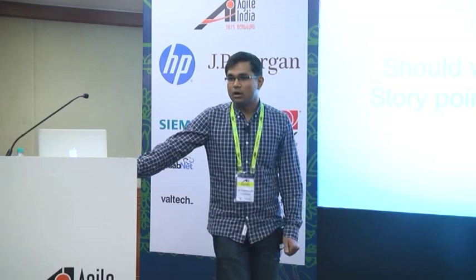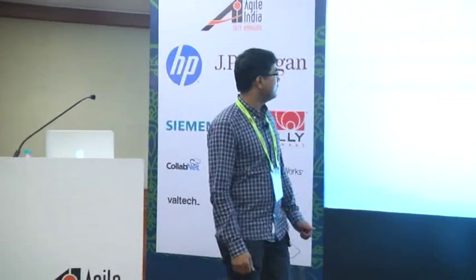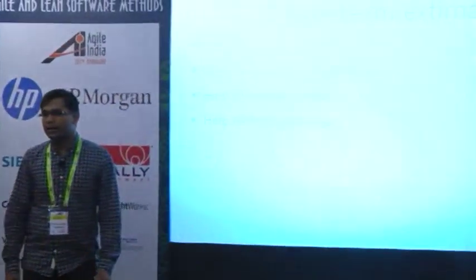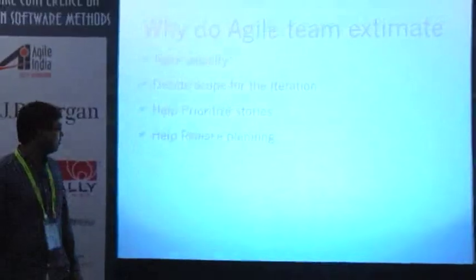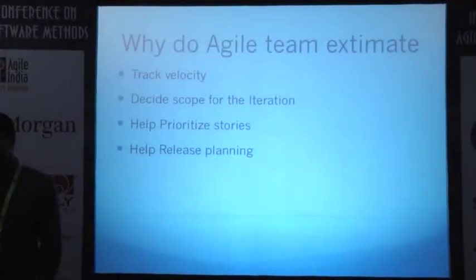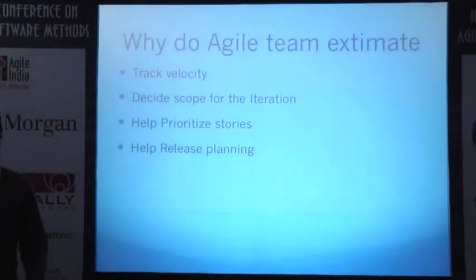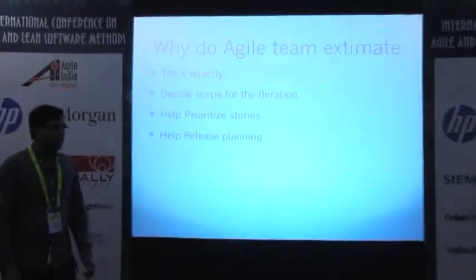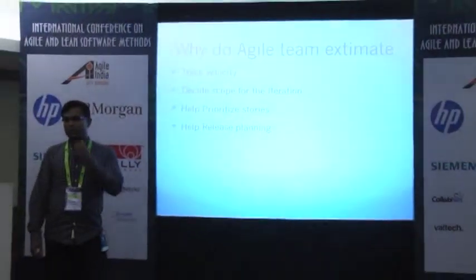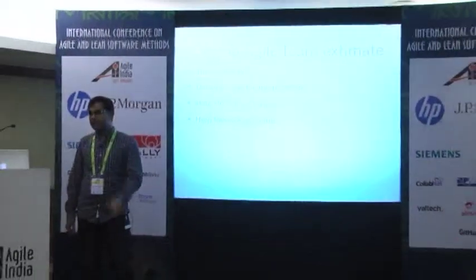So we were thinking: why do we estimate? We got these answers: because we want to track velocity, we want to decide scope — how much we can pick up in an iteration — and also to help prioritize stories for the product manager, so that the product manager can prioritize stories for the iteration. And eventually it also helps in planning releases.